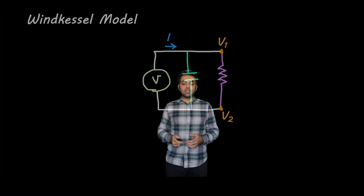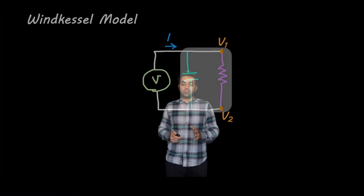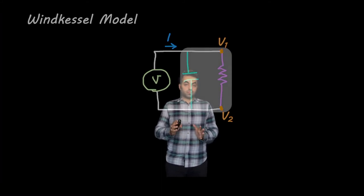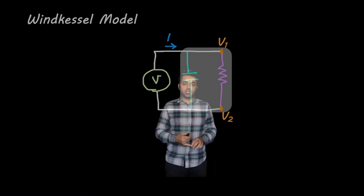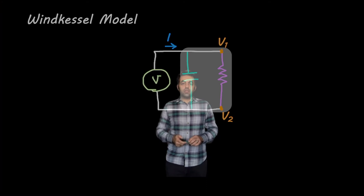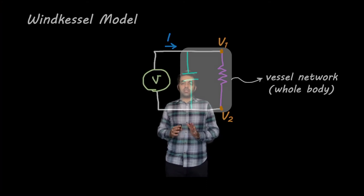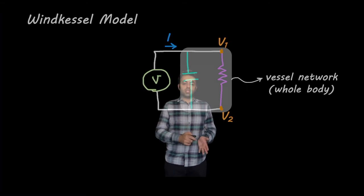But note that this is an electrical circuit that consists of two main parts: a capacitor and resistor, which is similar to our vessel network, whole body, what they do in our body. And then a voltage source,